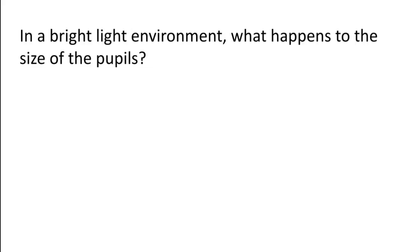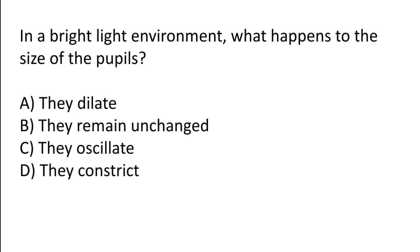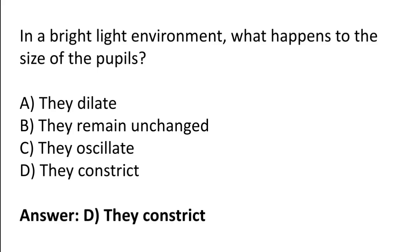In a bright light environment, what happens to the size of the pupils? They dilate, they remain unchanged, they oscillate, or they constrict. The correct answer is option D — in a bright light environment, the size of the pupil will constrict.